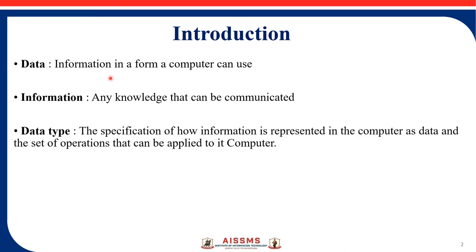What is data? Data is nothing but the information in a form a computer can use. What is information? Any knowledge that can be communicated — it is basic knowledge or any information. Next, data type: the specification of how information is represented in the computer as data, and the set of operations that can be applied to it.